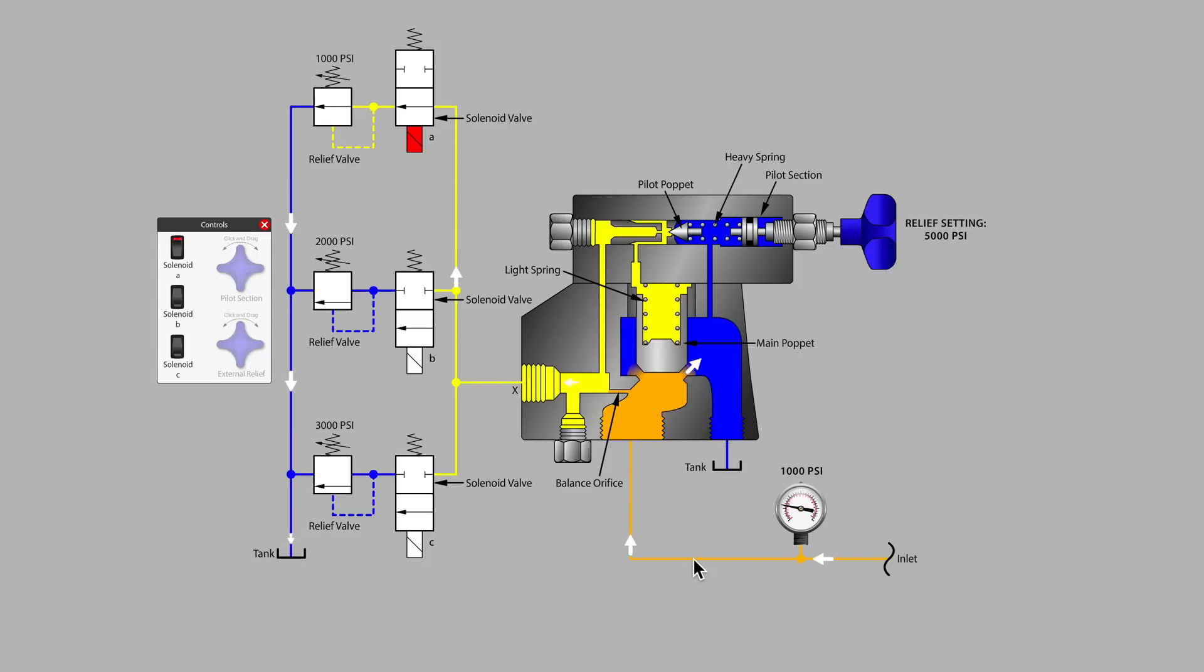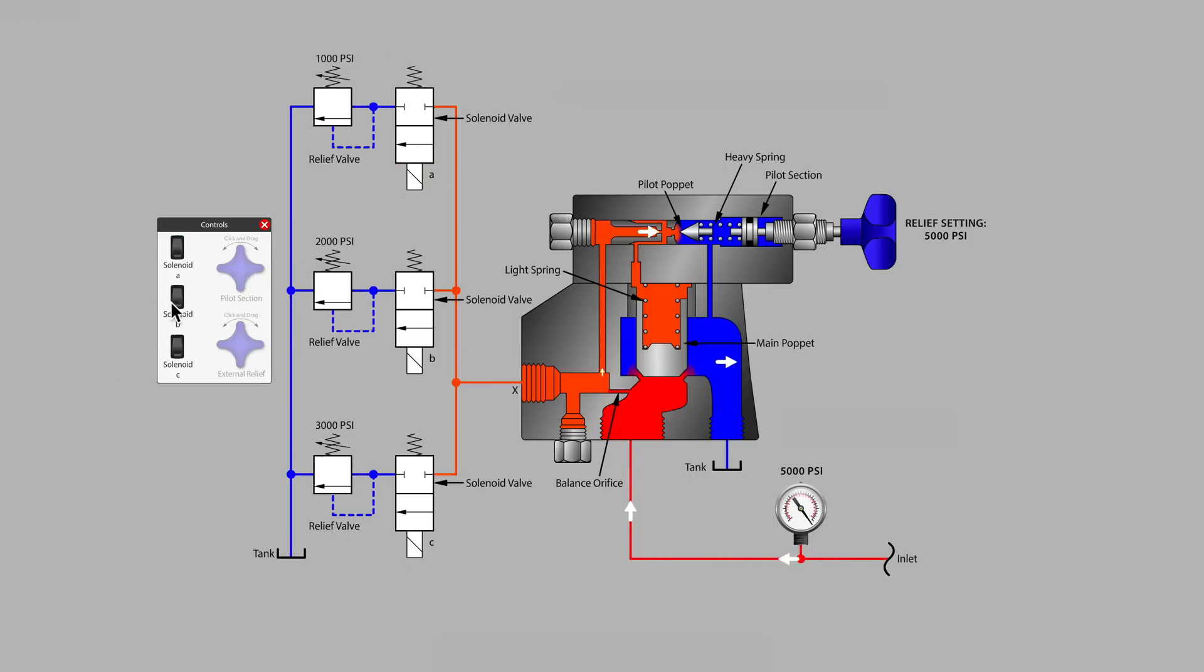This is a very typical scenario that could be used in a manufacturing plant for, say, a press machine where different pressures are needed at different steps in the machine's cycle.